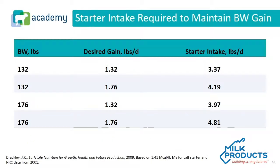We can use the NRC to predict starter intake required to maintain the desired body weight gain as the calf grows. At 132 pounds body weight and a desired gain of 1.32 pounds per day, starter intake needs to be at least 3.37 pounds per day. For a 176-pound calf where you desire a 1.76-pound-per-day average daily gain, 4.81 pounds of starter is required to maintain that gain.